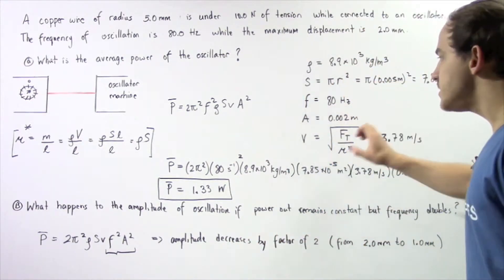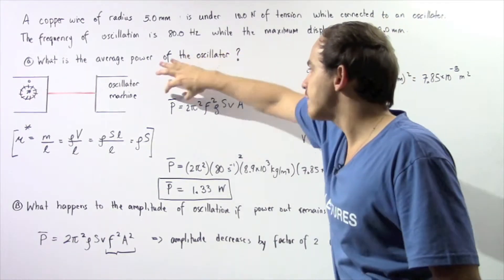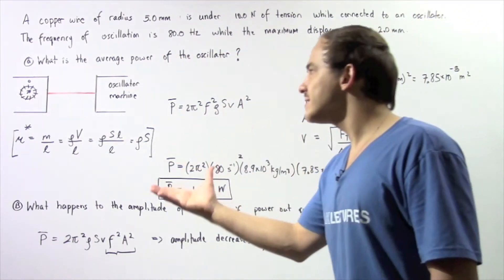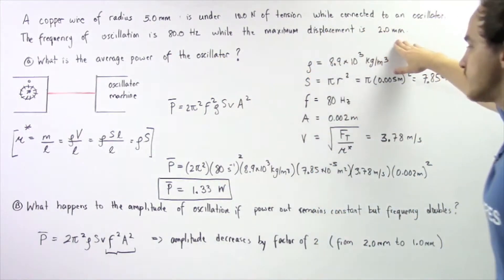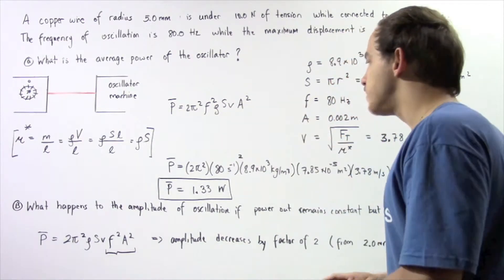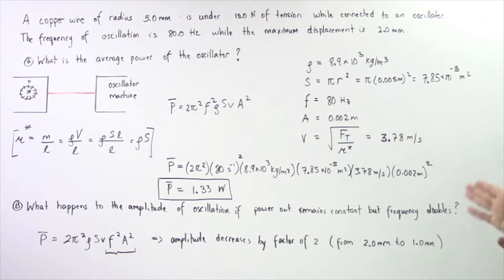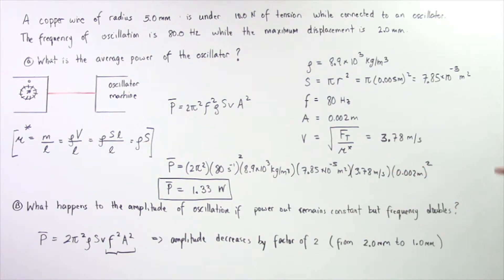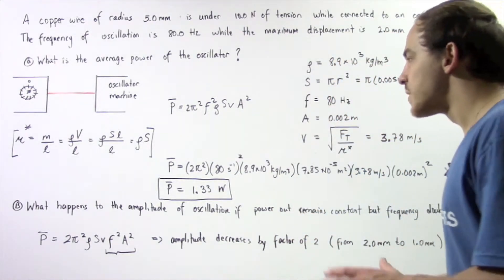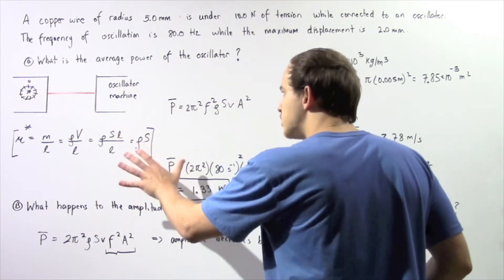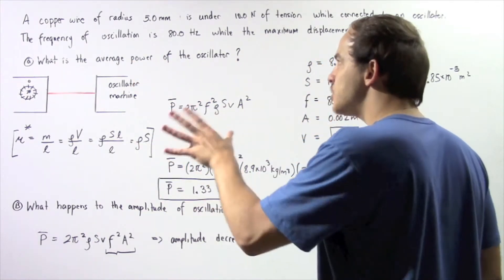Taking all these quantities and plugging into the average power equation: P = 2π² × (80 Hz)² × (8.9 × 10³ kg/m³) × (7.85 × 10⁻⁵ m²) × (3.78 m/s) × (0.002 m)². This gives an average power output of approximately 1.33 watts. This is how much power the oscillating machine requires to create this type of oscillation in the copper wire.